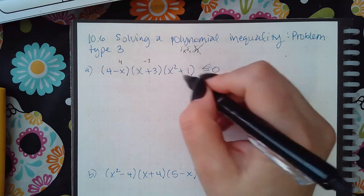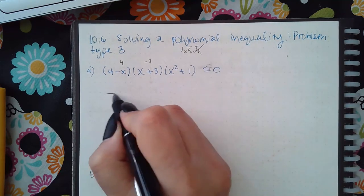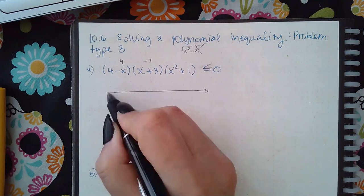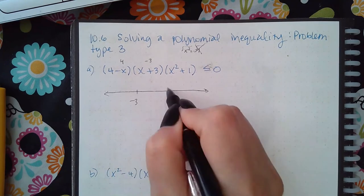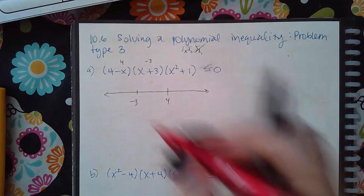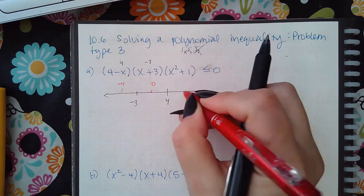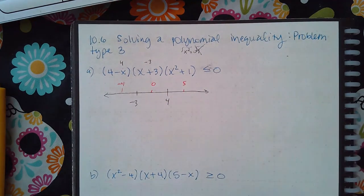So you don't get any x values in this factor. Let's go ahead and just do the number line with the two x values we did get. Then I can test negative 4, 0, and 5.